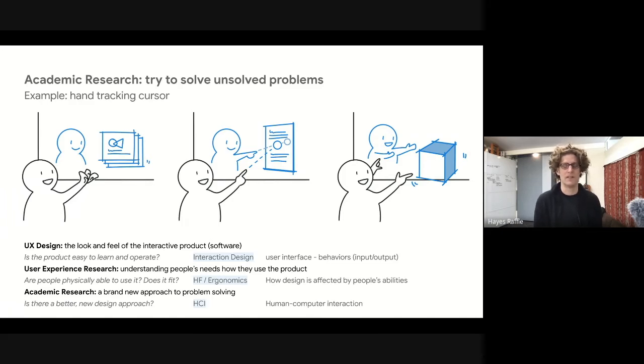Academic researchers tend to know a little bit about all of these disciplines. A single person would be doing UX design, coming up with user interfaces that make the product easy to learn and operate. They might be organizing and even conducting some of their own UX research. For instance, with a project like this, looking at human factors and ergonomics, making sure that design could be used by people with different physical abilities. And finally, looking at other academic research and figuring out if this is indeed a better new design or if someone else has done something that's even more useful than the current concept.